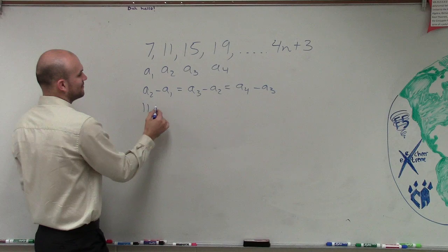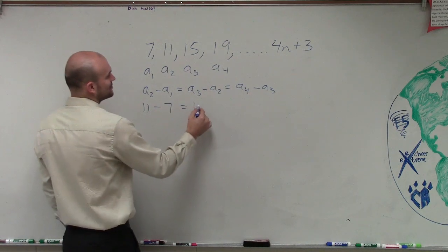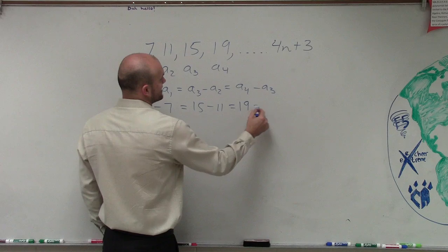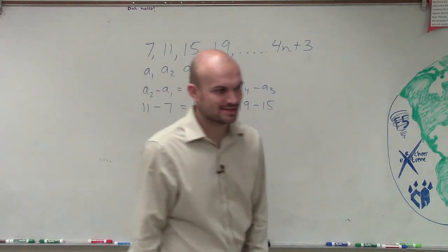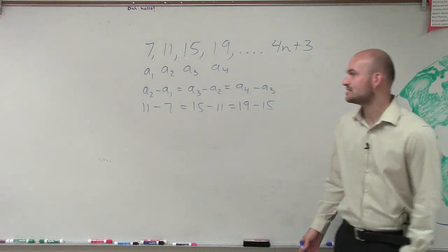So let's just plug in. So if we have 11 minus 7, is that equal to 15 minus 11? Is that equal to 19 minus 15? Now we're going to get into how many times we need to check this to determine it's arithmetic. But for right now, I'm just going to keep it very simple.